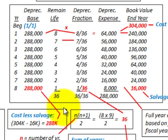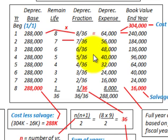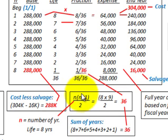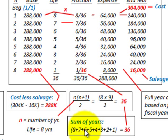Next we have to determine our depreciation fraction, which we multiply times the depreciation base to determine the depreciation expense. First we have to determine the sum of the years — this is why we call it the sum of the years method. That is the total sum of the years for the asset's total life: 8, 7, 6, and so on. The total sum of the years for an 8-year life is 36.